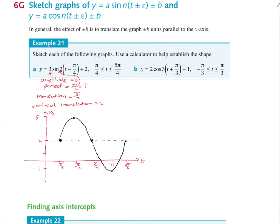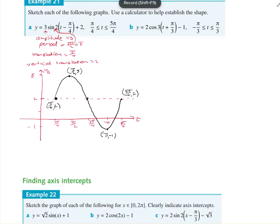Marking your endpoints: the start is at (pi on 4, 2) and the end is at (5 pi on 4, 2). The minimum is at (pi, minus 1) and the maximum is at (pi on 2, 5). As for x-intercepts, these are going to be awkward ones to calculate, so I won't do them in this example — I'll wait until we get down to Example 22.